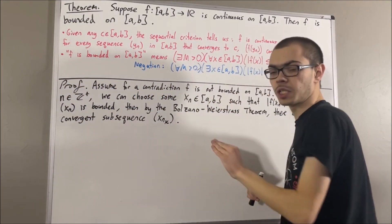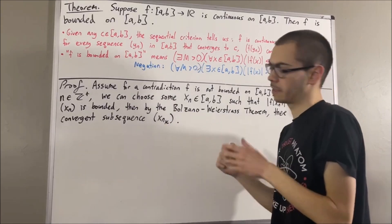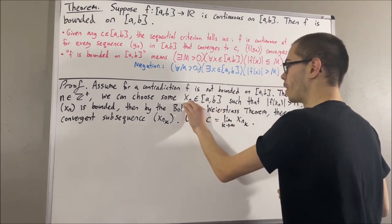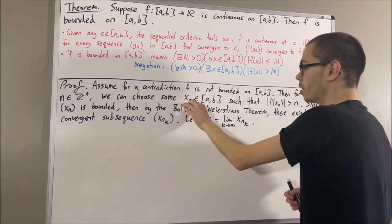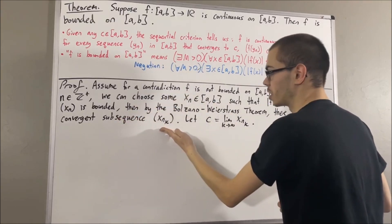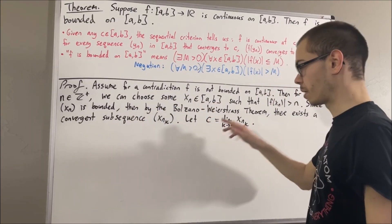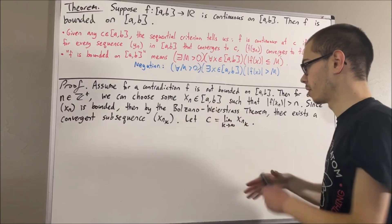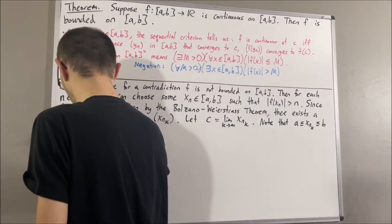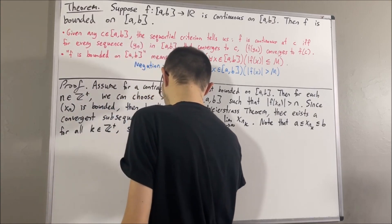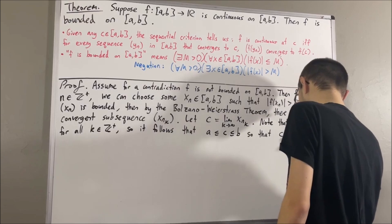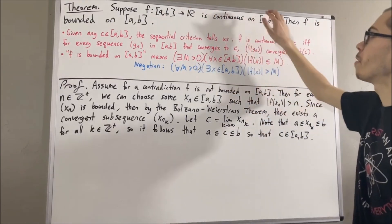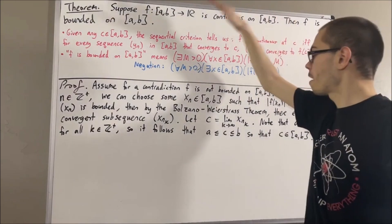Since this is a convergent sequence, we're going to say that the limit of the sequence is equal to c. Since every term of x1, x2, x3, and so on is between a and b, certainly every term of the subsequence is also between a and b. And since every term of the subsequence is between a and b, it follows that the limit of the subsequence must also be between a and b.